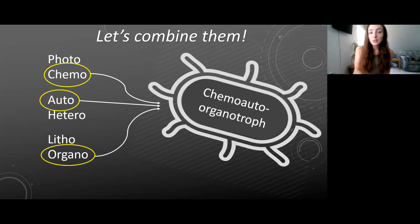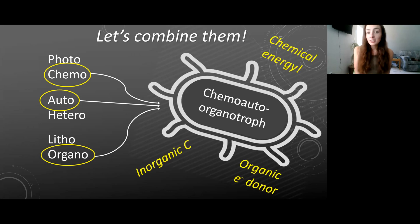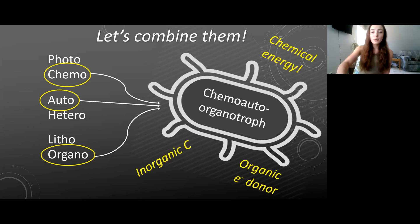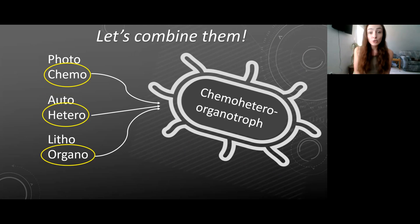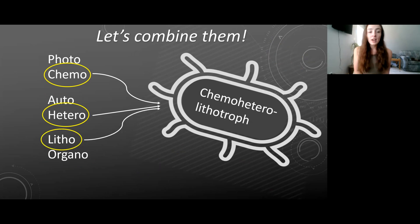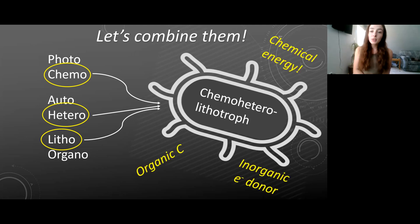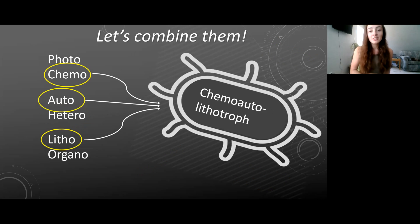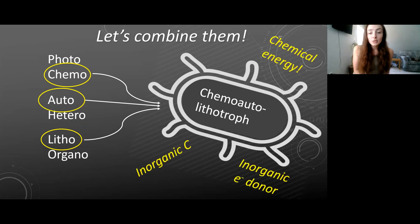Moving on to chemotrophy: chemo-auto-organotrophs have a chemical energy source, an inorganic carbon source, and an organic electron donor. Chemo-hetero-organotrophs have a chemical energy source, an organic carbon source, and an organic electron donor. Chemo-hetero-lithotrophs have a chemical energy source, an organic carbon source, and an inorganic electron donor. And lastly, chemo-auto-lithotrophs have chemical energy, an inorganic carbon source, and an inorganic electron donor.